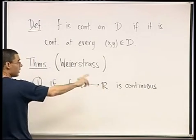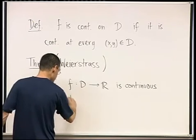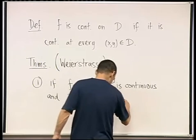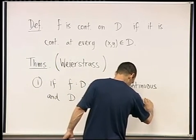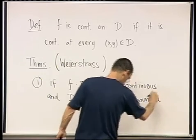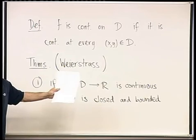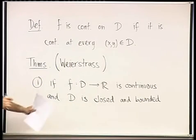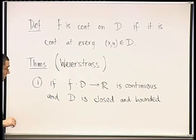if f from D to R is continuous, and D is closed and bounded. Bounded domain means it's contained in some ball. Remember that? In some neighborhood. And closed means it contains its boundary. Okay? Every boundary point is also in it.